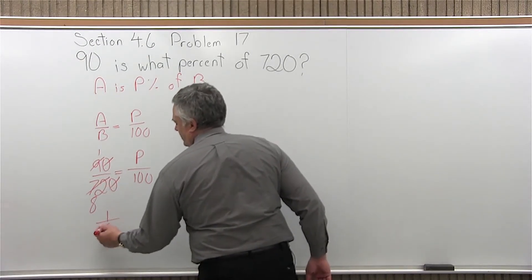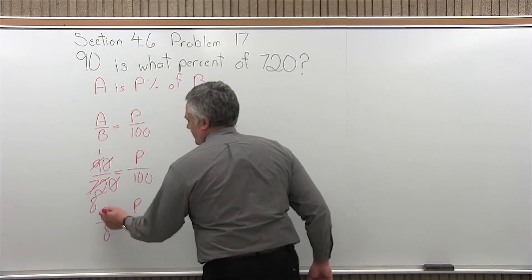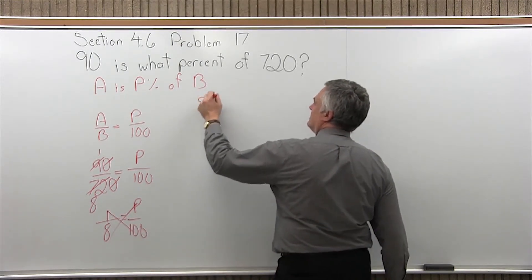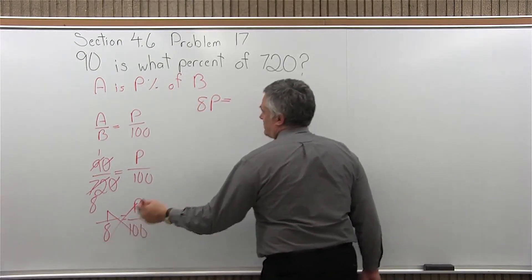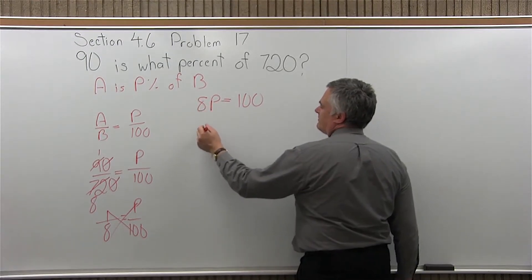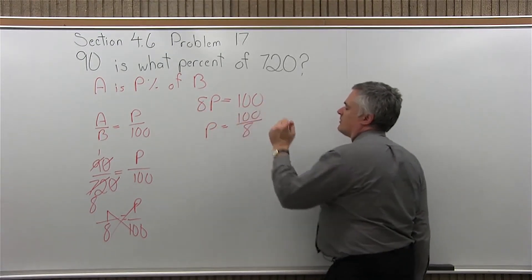So, it really boils down to 1 over 8 equals P over 100. And now I can cross-multiply. 8 times P is 8P. 1 times 100 is 100. Solve for P. Divide away the 8. 100 over 8.